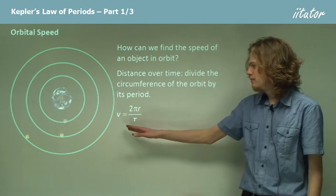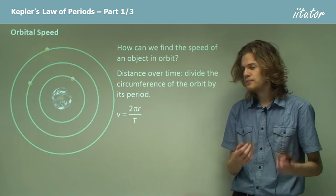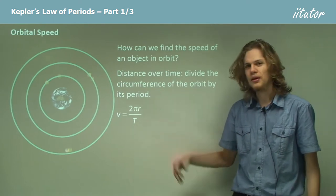So we have v, the orbital velocity, equals 2πr, that is the distance, over capital T, that is the period.